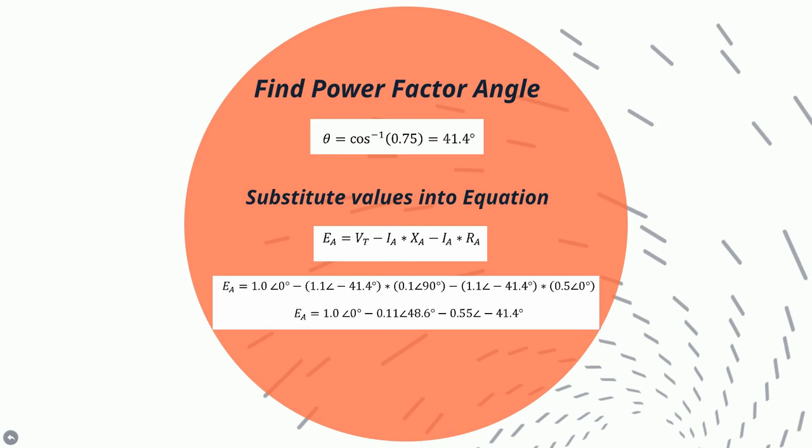Next, you substitute the values from the problem into the equation. So the terminal voltage is given as one per unit, and we assign an angle of zero degrees. The current is given as 1.1 per unit, and since the current lags the voltage, we assign negative 41.4 degrees.